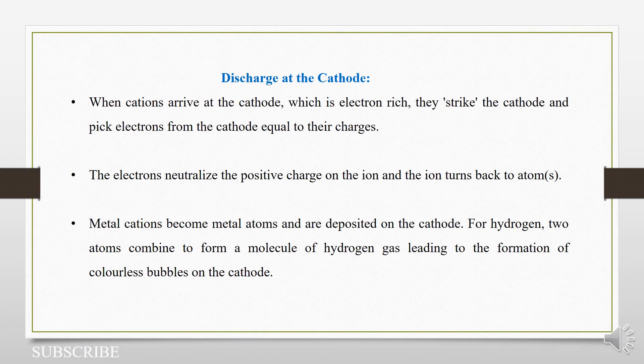So we have seen that when ions move to their respective electrodes, they have to get discharged, meaning they have to lose their charges. So now we are going to focus on discharge at the cathode.